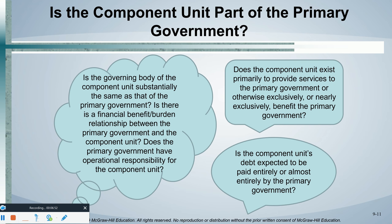On this next slide, you see three different thought bubbles. If a minimum of one of these three thought bubbles is true and we can put a checkmark there, you have a blending. If all three thought bubbles are false — nope, nope, nope — then you default to a discrete presentation.